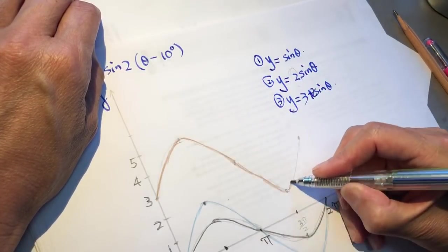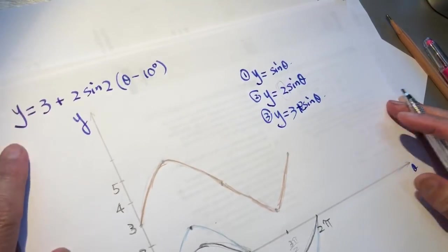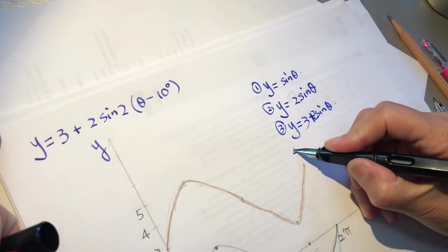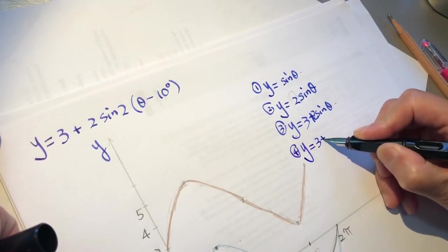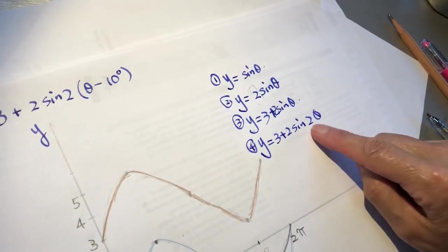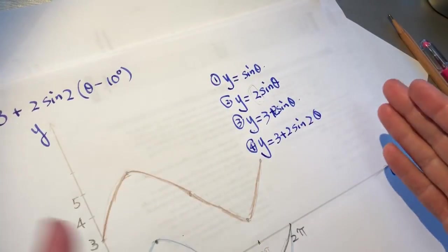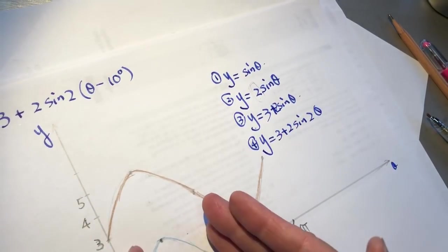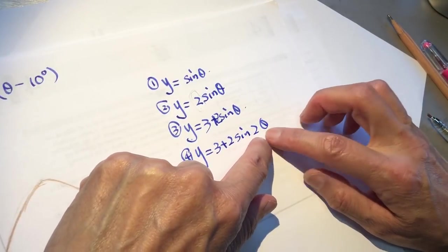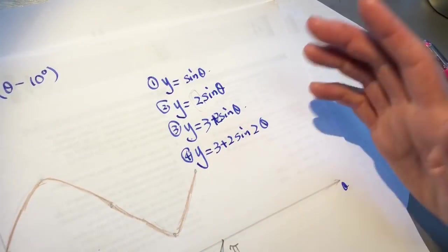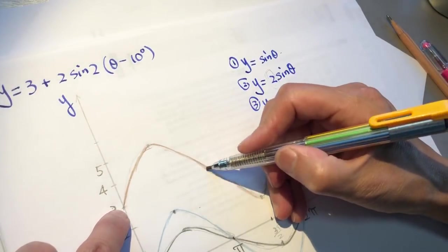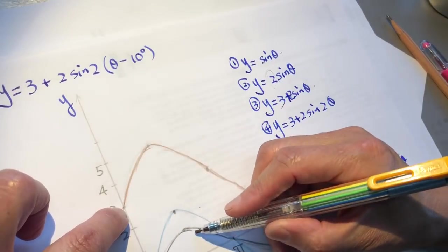Graph three is y equals 3 plus 2 sine theta. Now graph four: y equals 3 plus 2 sine 2 theta. With 2 theta, the frequency doubles — what was one rotation now becomes two rotations in the same interval. If the coefficient of theta were three, there would be three rotations. We shrink the period so the wave goes up and down more quickly.